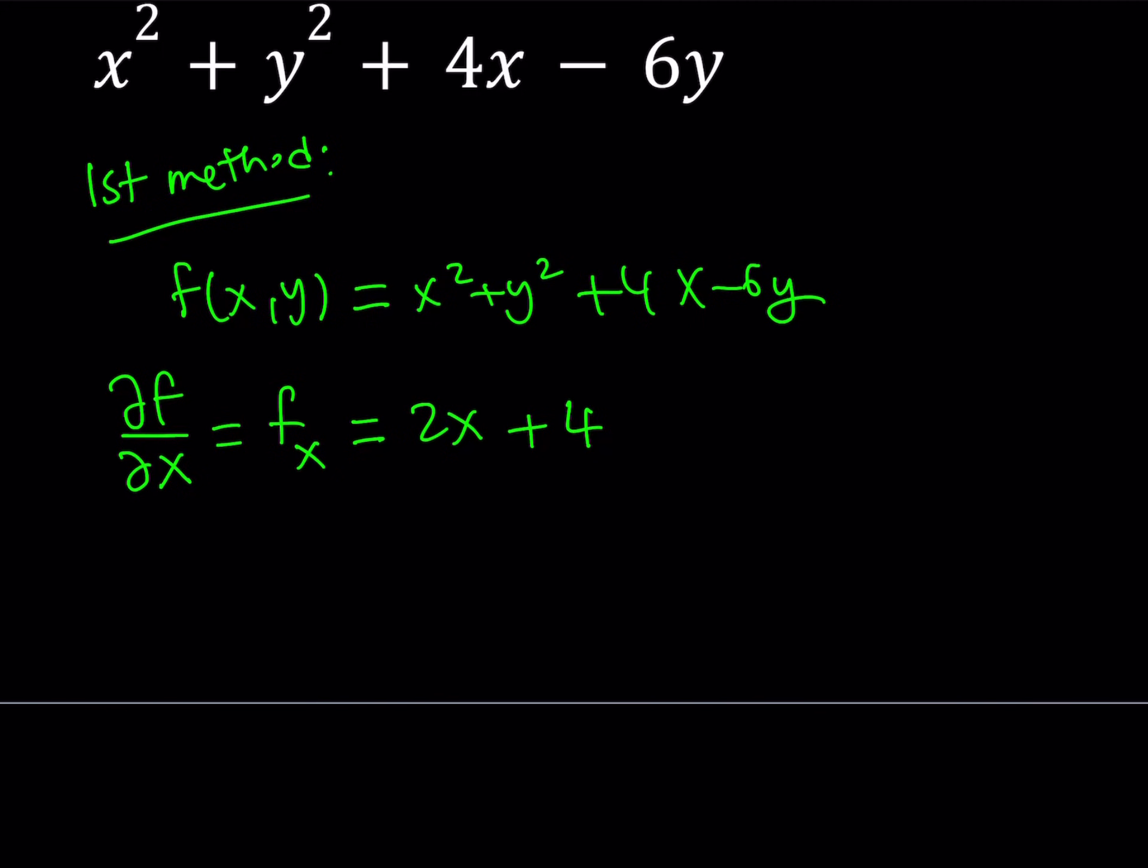That is the partial derivative. I'm going to set the partial derivative with respect to x to 0. And from here I'm getting an x value. So let me record that: x equals negative 2.